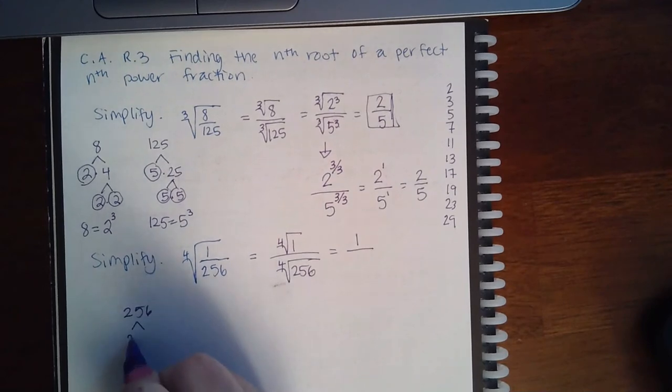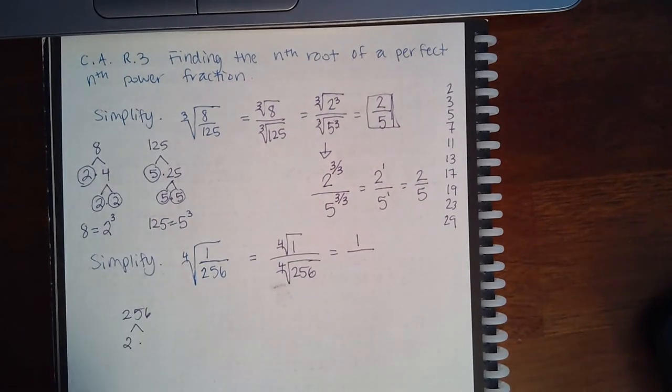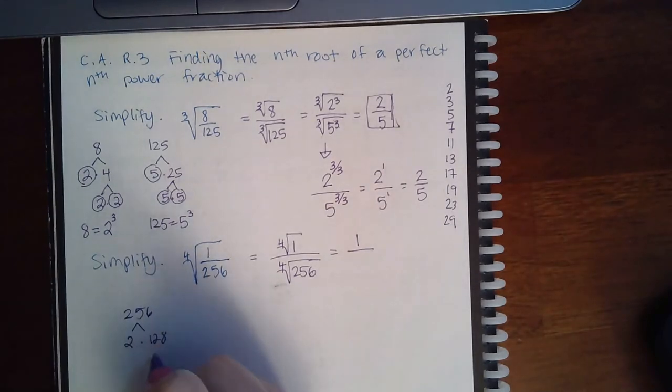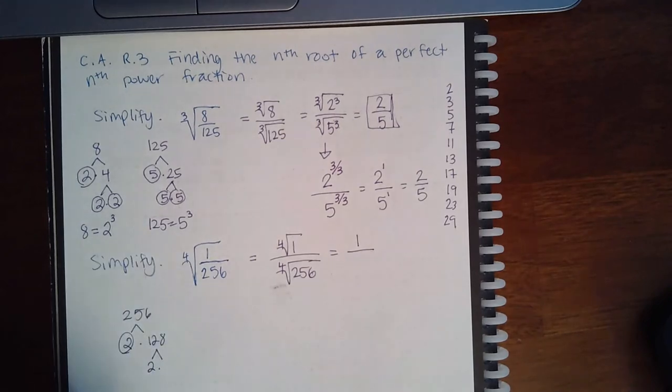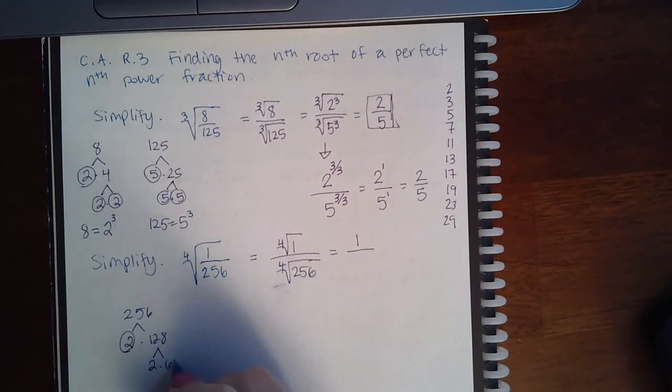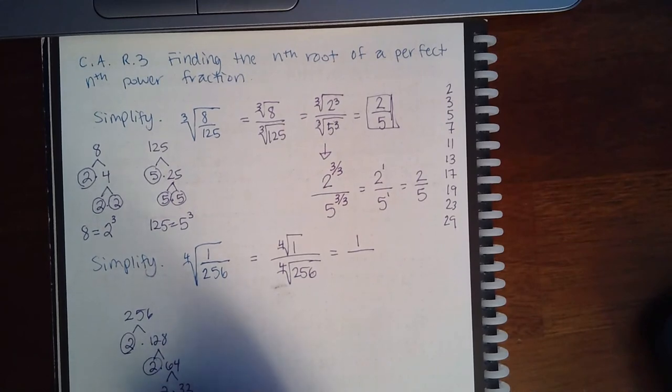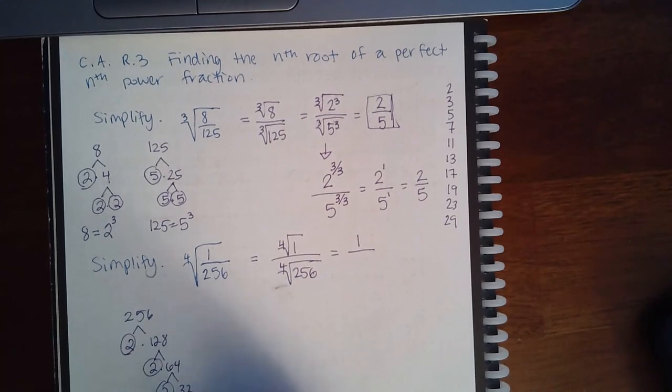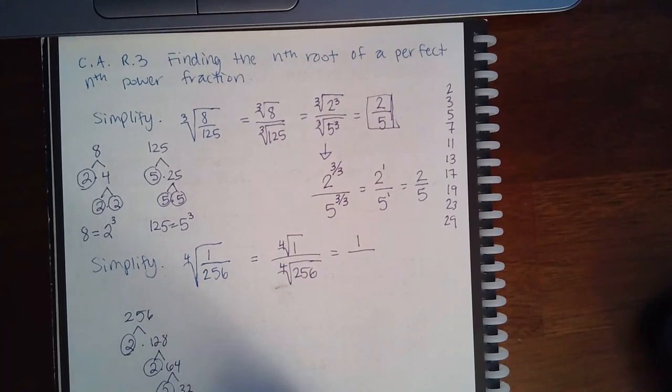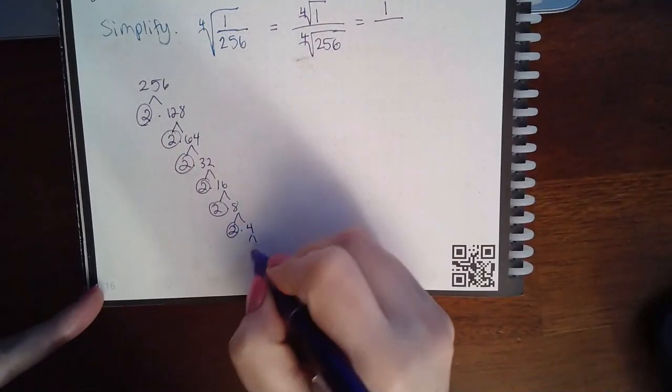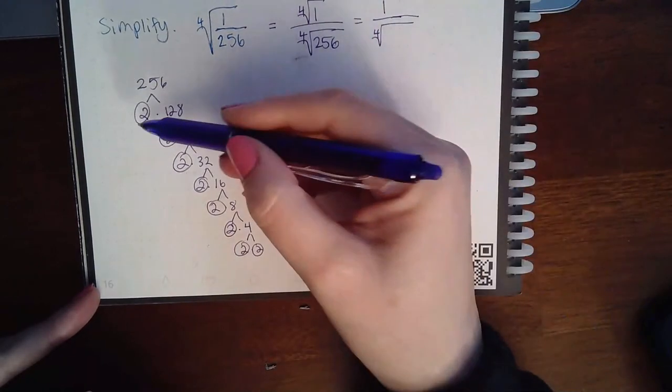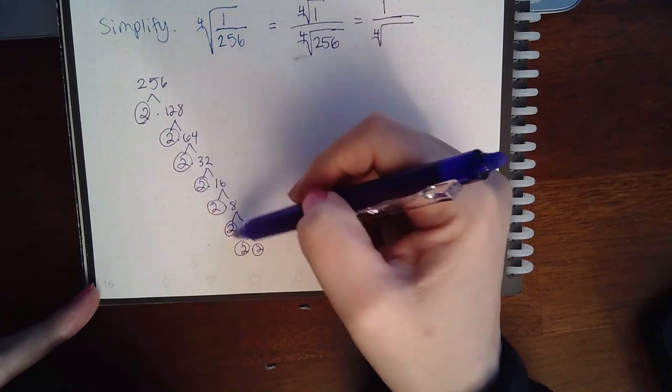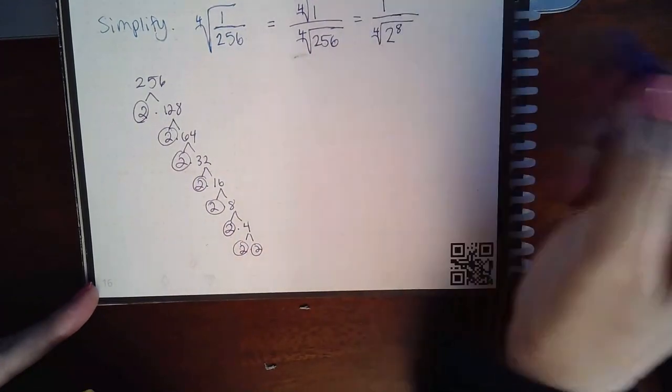So I can tell that 2 goes into that because it's an even number. And I get 128. That's a prime. This is not. I could divide by 2 again. I get 64. I could divide by 2 again. I get 32. I could divide by 2 again. I get 16. I could divide that again. I get 8. I could divide 8. I get 4. Can't see me. And then I can divide 4 and get 2 and 2. So 256 can actually be written as 1, 2, 3, 4, 5, 6, 7, 8 - 2 to the eighth power.